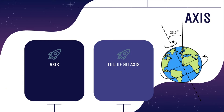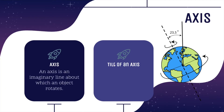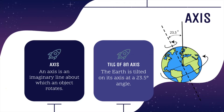Now let's talk about an axis. An axis is an imaginary line about which an object rotates. You can see Earth's axis in the picture on the right. The Earth is tilted on its axis at a 23.5 degree angle.